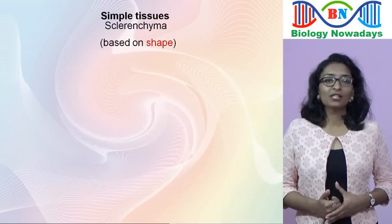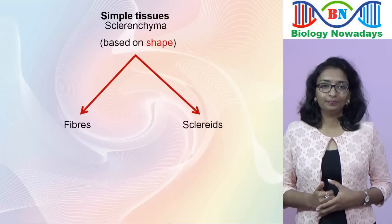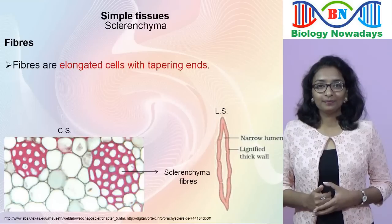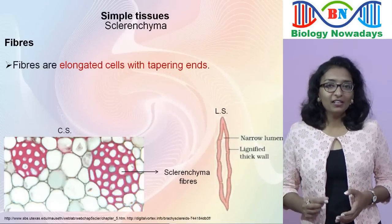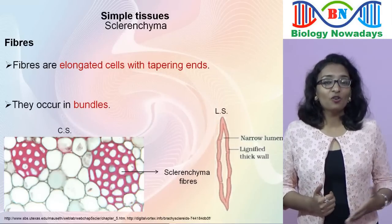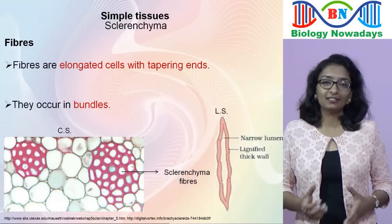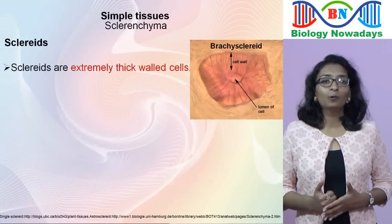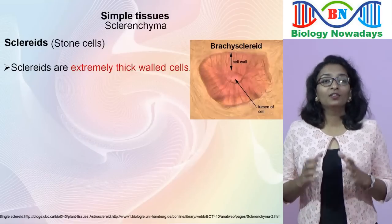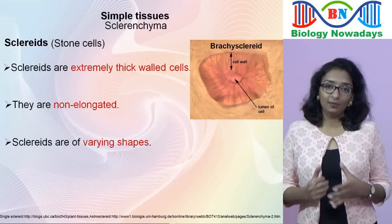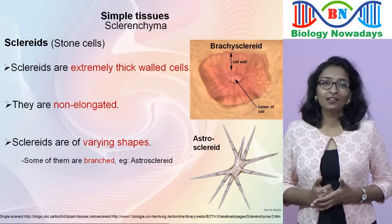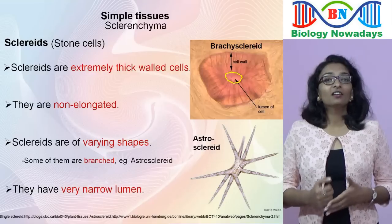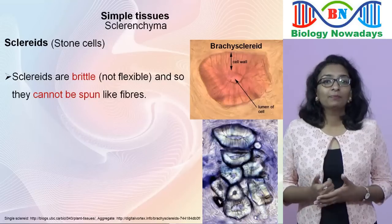Based on shape, sclerenchyma tissues are classified into two types: fibers and sclereids. Fibers are elongated cells with tapering ends that occur in bundles. Being strong and flexible, fibers are used in the manufacture of ropes and textiles — jute and coir are obtained from thick bundles of fibers. Sclereids are extremely thick-walled cells, also called stone cells. They are non-elongated compared to fibers, vary in shape, and some are even branched. Because of the extremely thickened cell walls, they have very narrow lumen. Sclereids are brittle, not flexible, and so they cannot be spun like fibers.